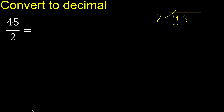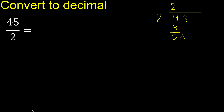2 multiplied by 3 is 6 — too big. 2 multiplied by 2 is 4, which is not greater. 4 minus 4 is 0. Next: eliminate the 0.